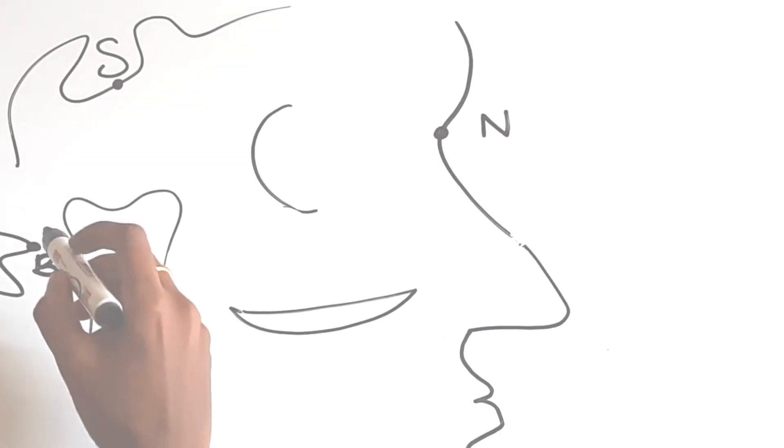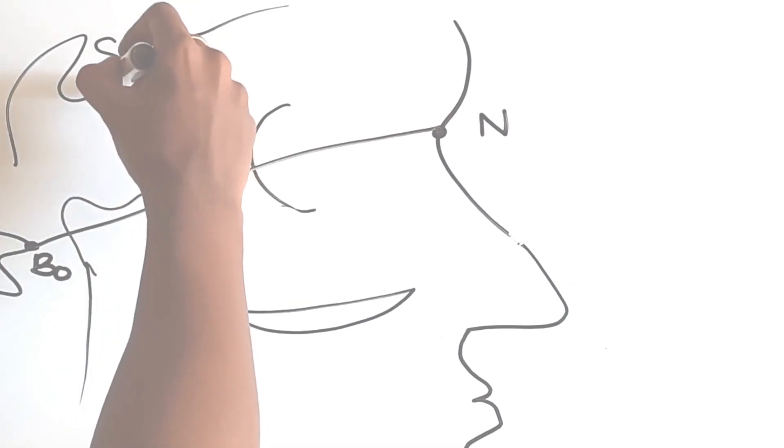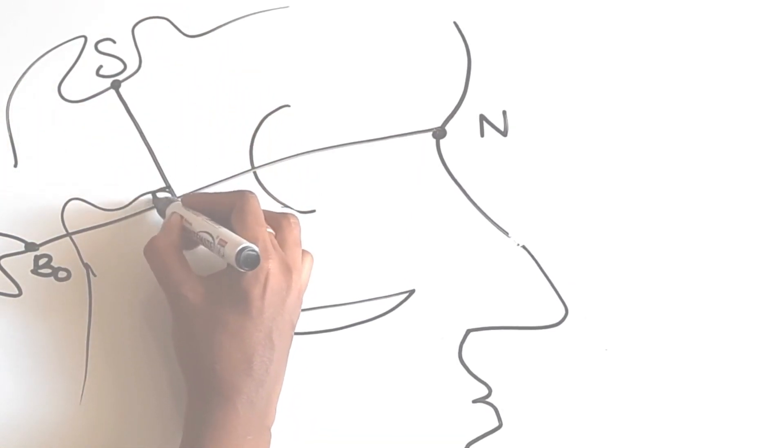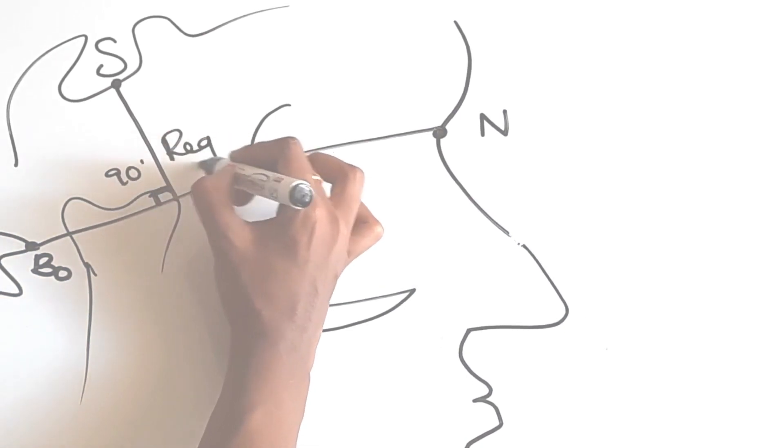If we draw a line from Bolton to nasion and take a midpoint from sella to this plane, this plane of Bolton to nasion, we get a perpendicular midpoint and this is called the registration point.